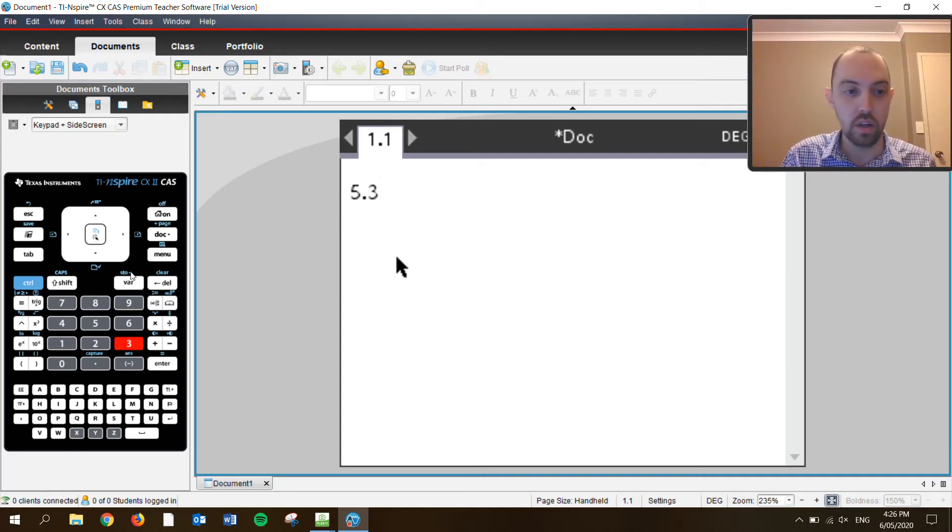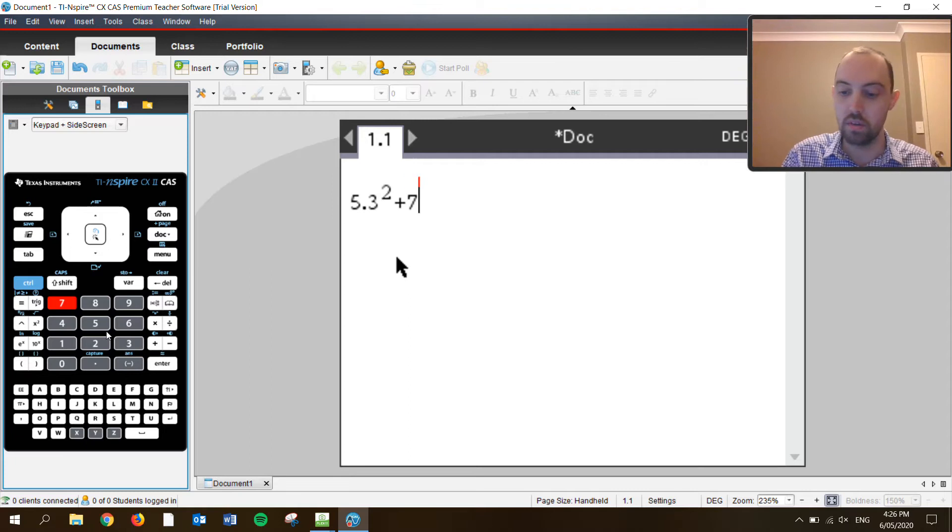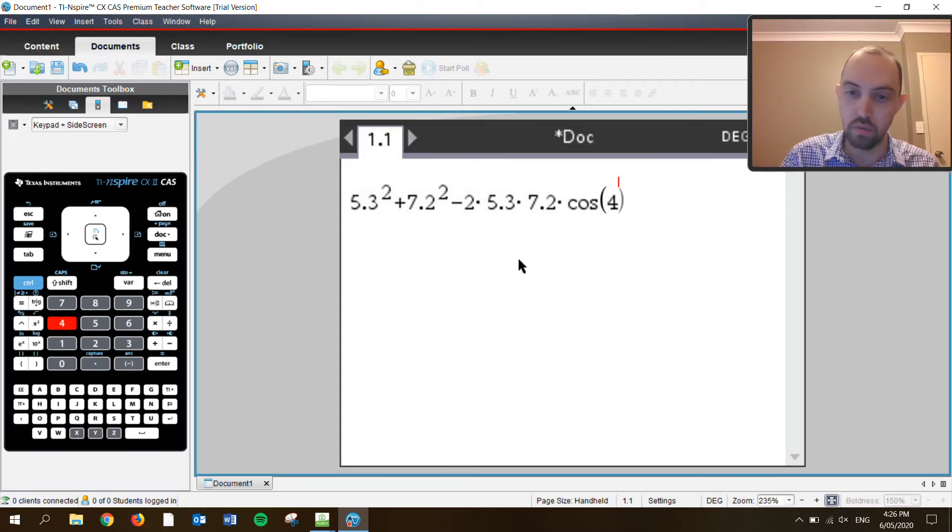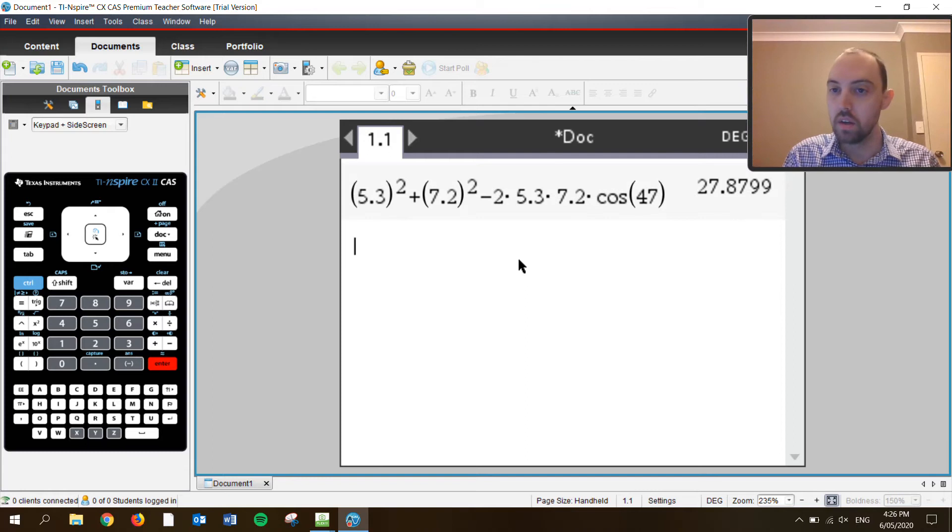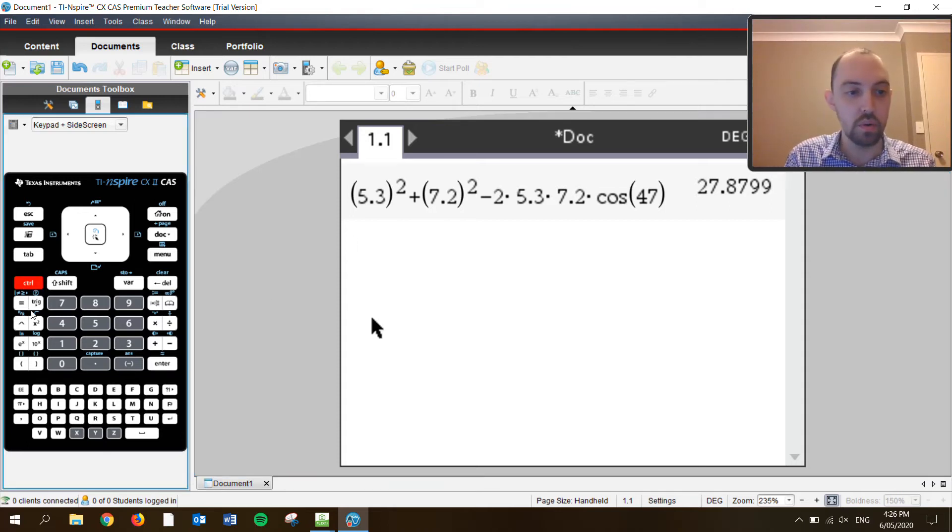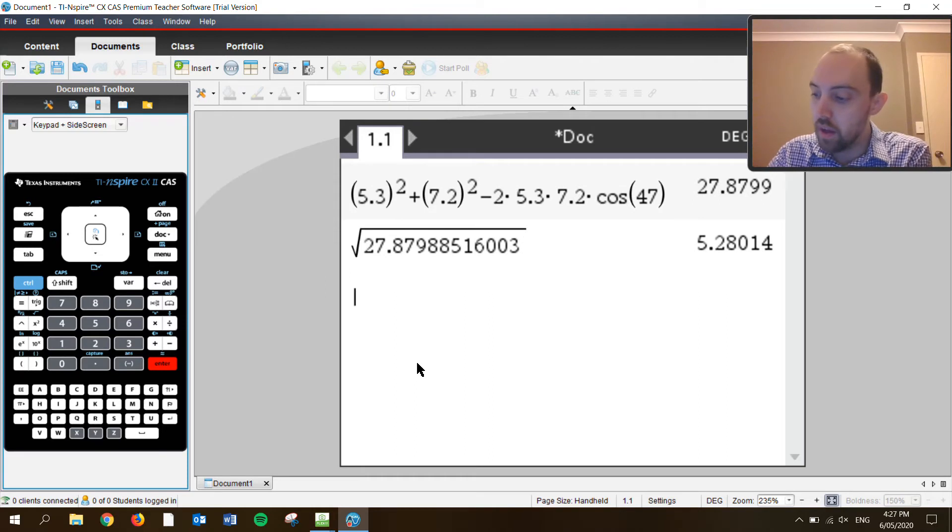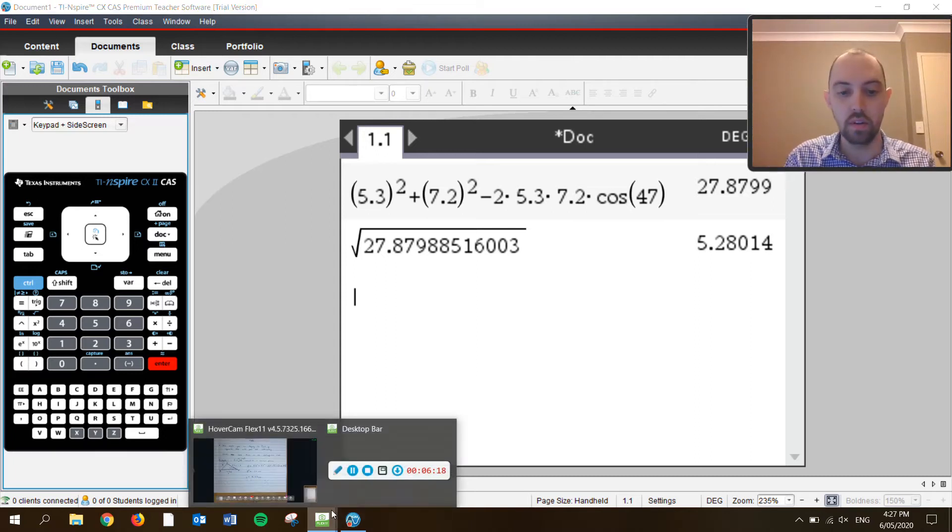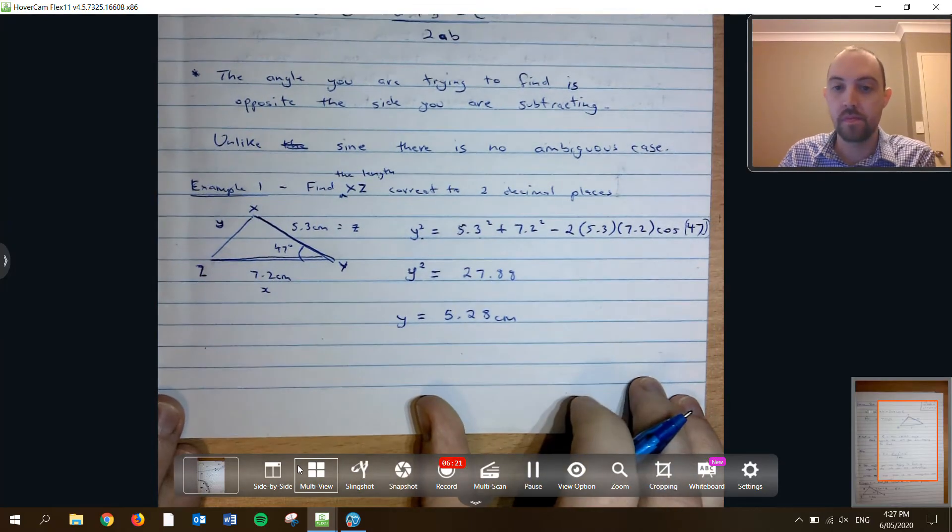5.3 squared plus 7.2 squared, take 2 times 5.3 times 7.2, times by the cos of 47, which is 27.87, which is what y squared is equal to. And then we take the square root of that answer. And then we get 5.28 centimeters. Just like that.